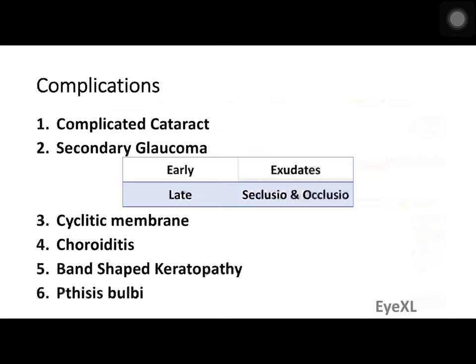Complications of acute anterior uveitis include: complicated cataract, secondary glaucoma (early glaucoma due to exudates blocking the trabecular meshwork; late glaucoma due to seclusio and occlusio pupillae), cyclitic membrane on the posterior surface of the lens, choroiditis by extension, band-shaped keratopathy, and finally phthisis bulbi as the end stage.